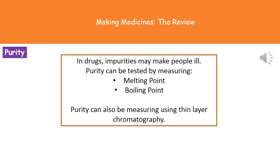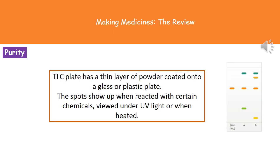The purity of a drug is obviously very important. If there are impurities in a drug that people are taking, it might make them ill or cause unexpected side effects. Tests are carried out to ensure the drug produced in the batch process is as pure as possible. There are three different ways to measure purity. We can look at melting point and boiling point — take a small sample, heat it up, and see at what point it turns to a liquid and then to a gas, comparing against the standard value for the pure drug. If they don't match, that tells us there are impurities. The third method is thin layer chromatography (TLC).